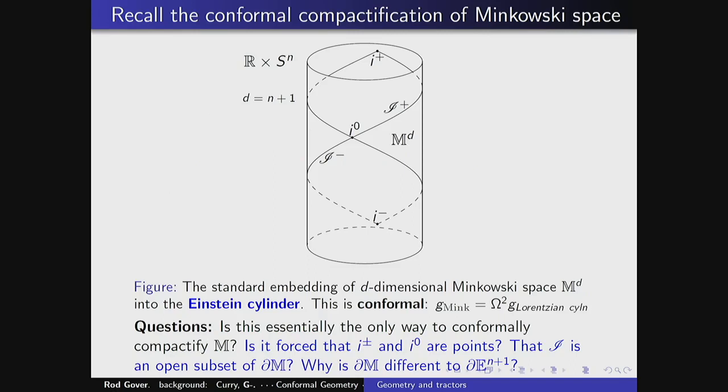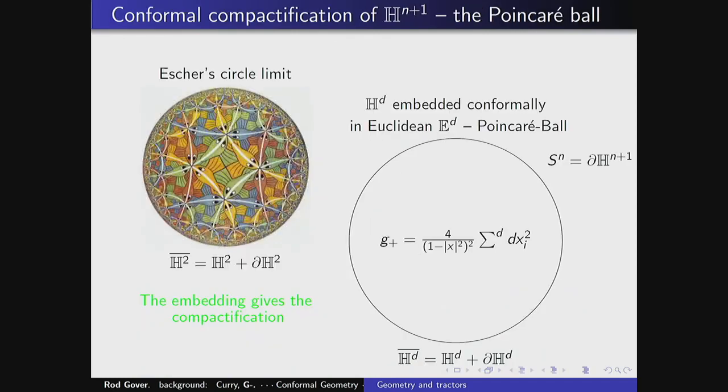Instead of just getting a one-point compactification, you have a boundary — but it's a boundary with these singular-type points, I⁰ and I⁺. I already asked those questions: is it the only way to do it, and so on. So we should be thinking about that.